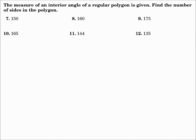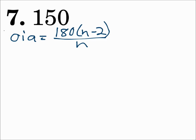The measure of an interior angle of a regular polygon is given. Find the number of sides in the polygon. Number 7, 150 degrees. So one interior angle has a measure of 150 degrees. Since that's one interior angle, I'll use the formula dealing with one interior angle, where one interior angle equals 180 times N minus 2, all over N. Since there are two N's in this formula and I'm solving for N, I need to do a little algebra first.